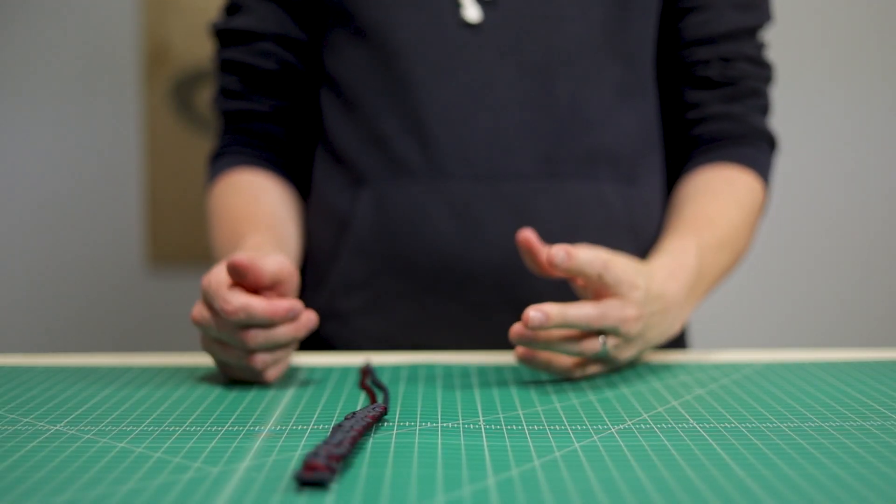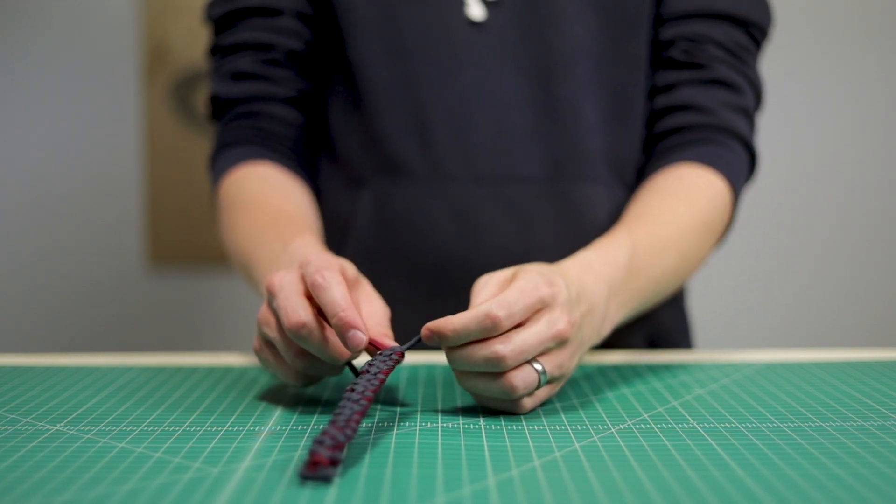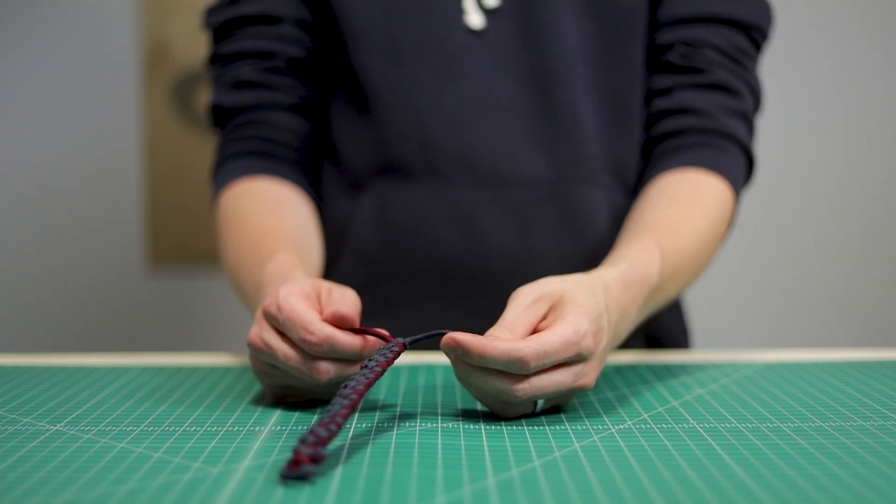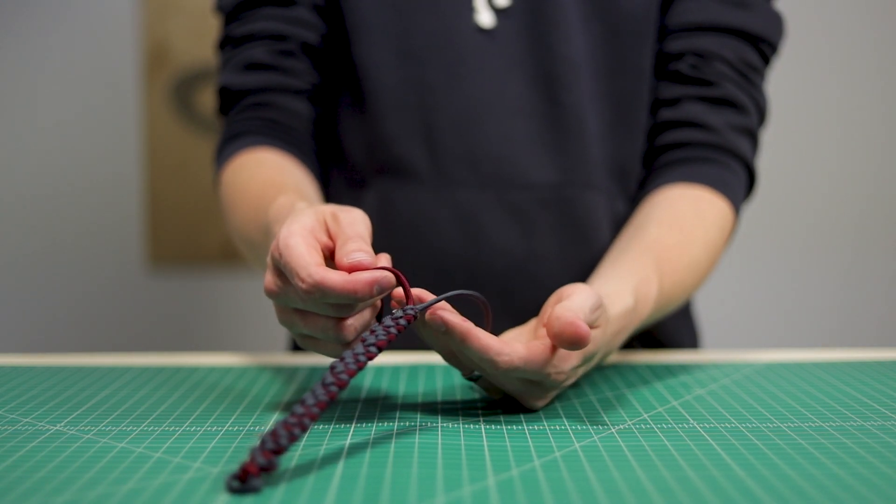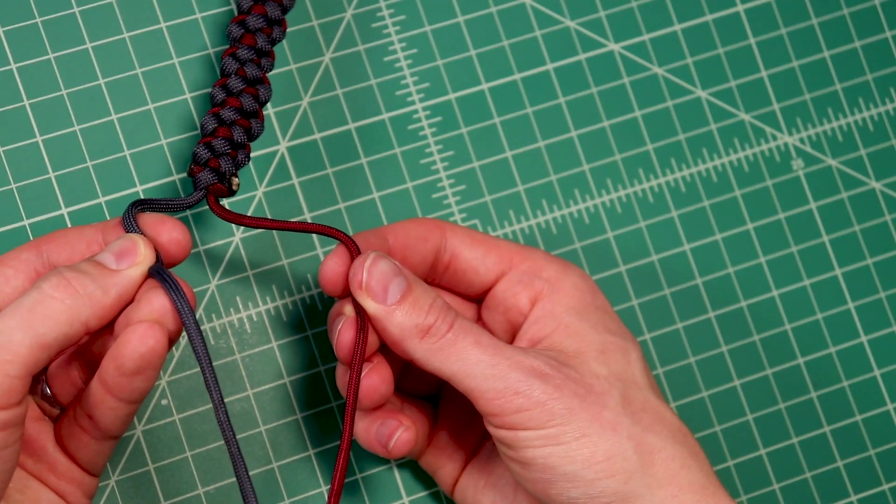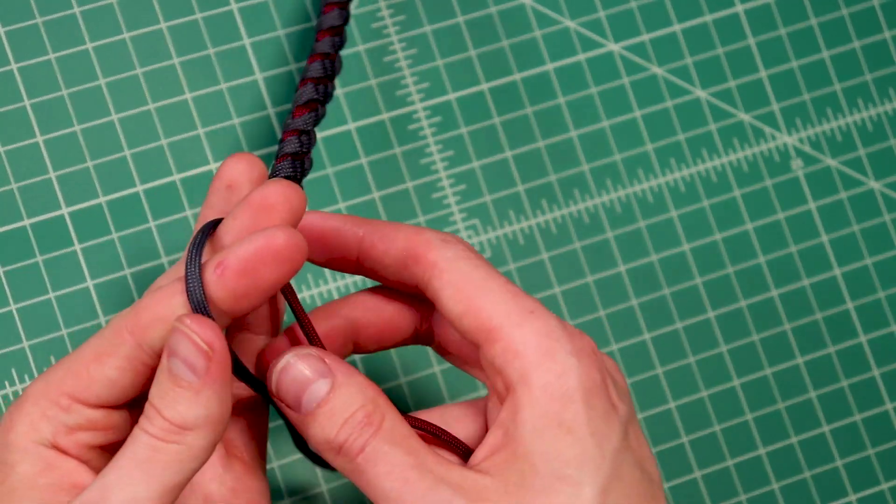All right, so if you haven't made a diamond knot, I'll go through it fairly quickly and if you need a designated tutorial for it, we'll put a link in the description for that as well. I like to tie it around my hand. Because I only have a couple inches left, I'm just going to do two fingers.